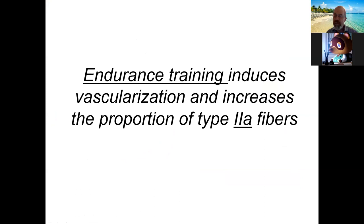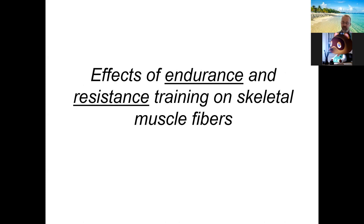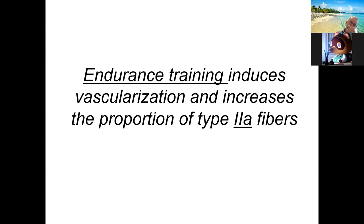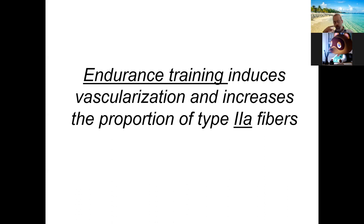There are two primary types of exercise: resistance training and endurance training. Endurance training involves a lot of cardiovascular exercises like distance running. Genetics gives us a predetermined proportion of muscle fibers, but with certain types of exercise we can modify that. Endurance training has been found to increase blood supply to all muscles and increase the proportion of type 2A fibers.